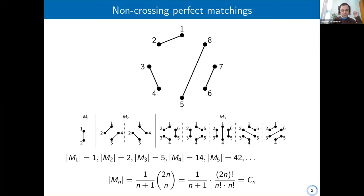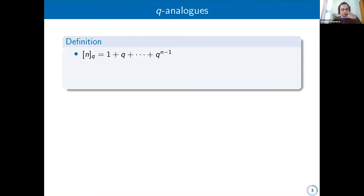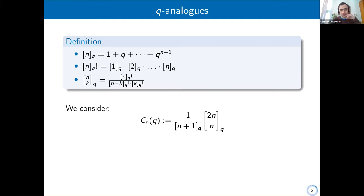We have some combinatorial objects, we counted them, and then we want to consider q-analogues. We want to deform all the integers into a polynomial, and we do that by replacing an integer n by the polynomial 1 + q + ... + q^(n-1). If we plug in q equals one, we obtain back the original number. There's the q-analogue of n factorial, which is just a product of the q-analogues of one up to n, and then there's the q-binomial coefficient. All of these objects are polynomials in q. When we plug in q equals one, we get back the object without the square brackets. We can consider the q-analogue of the Catalan numbers.